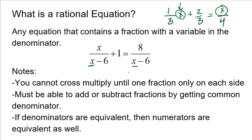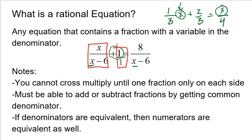Now keep in mind you cannot cross multiply until there is one fraction only on each side. In this current example, if this plus one was not here, then I could cross multiply. But because that plus one is there, I have to combine the two fractions on the left-hand side. There are two fractions on that left-hand side: x divided by x minus 6 is one fraction, and one is also a fraction because you can turn any number into a fraction by putting it over one. You have to get a common denominator in order to add or subtract fractions.